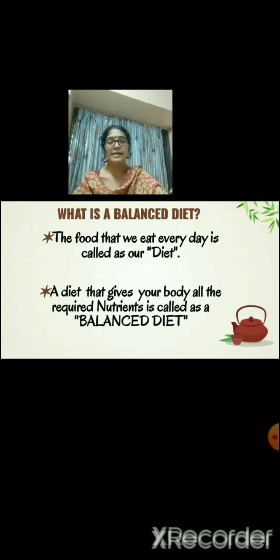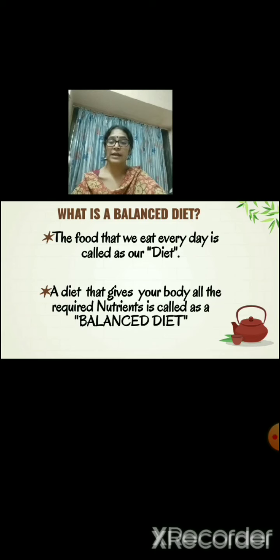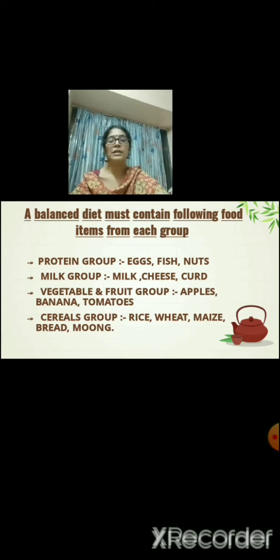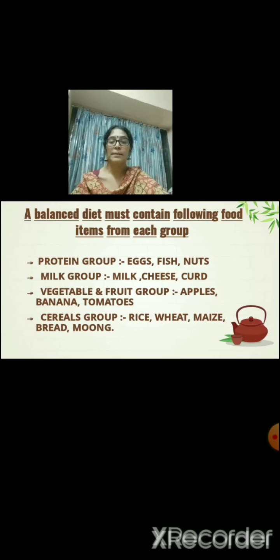We cannot have the same type of food daily, or include only the food we love in our diet. We cannot have the same vegetables and fruits every day — our body will not function properly as it requires all the nutrients. When we need to grow properly we need a balanced diet, which we get from all the different food groups rich in different nutrients. We need to have something from all the groups, whichever food product we like — that is called a balanced diet.